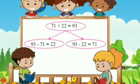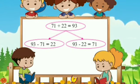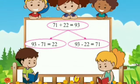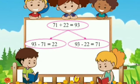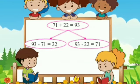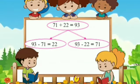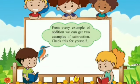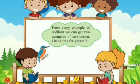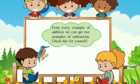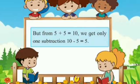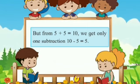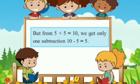Another example: 71 plus 22 is equal to 93. Therefore, 93 minus 22 is equal to 71. In this way, from one addition example we get two subtraction examples. But from 5 plus 5 is equal to 10, we get only one subtraction: 10 minus 5 is equal to 5, because both numbers are the same.